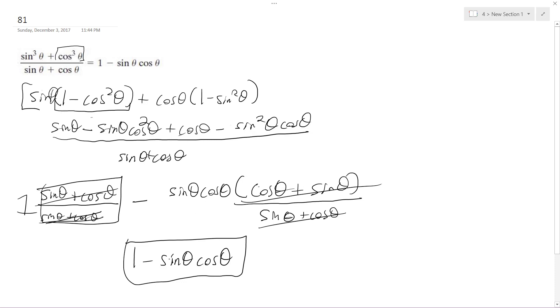And that's how I got one minus sine theta times cosine theta left over, which is what is on the right side of the equation. And that's how you prove it.